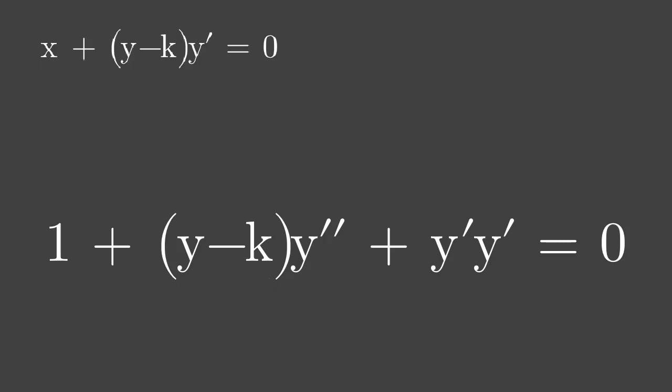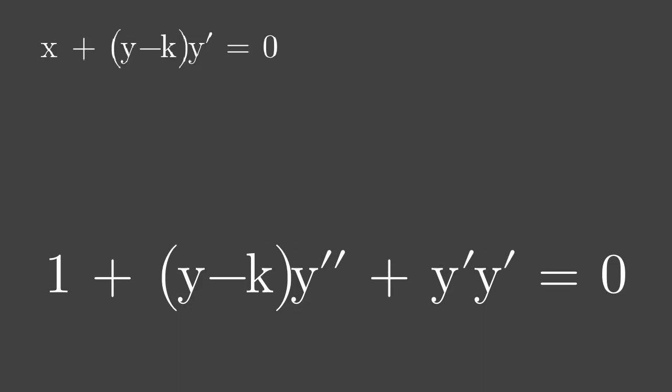As usual, go back to the last equation and express y minus k in terms of the other. And that is negative x over y prime.